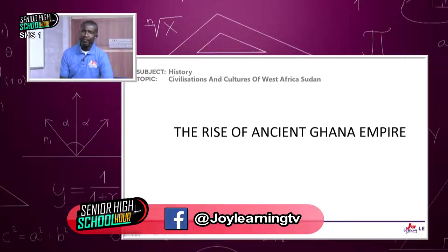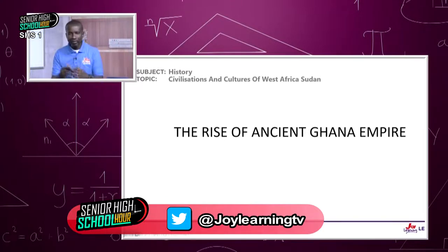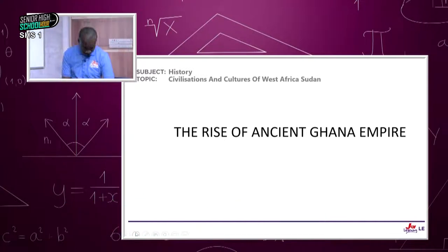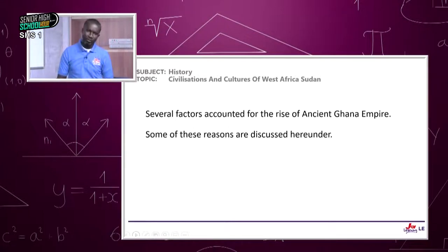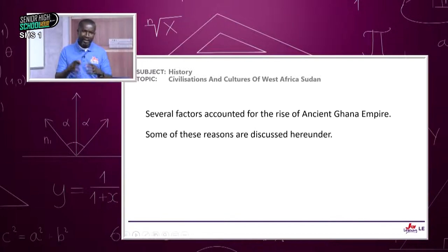Now, the rise of Ghana empire. We've given ourselves a little background: Ghana empire was built by the Soninke, fell at the Battle of Kirina in 1235, its capital kept shifting, and at the height of its glory the capital was Kumbi Saleh. Like all other kingdoms, they rise and then they fall. Several factors accounted for the rise of ancient Ghana empire.